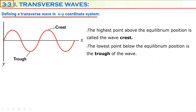According to the waveform, we can define the wave. The equilibrium position is the natural position of the medium with no vibration. When the medium vibrates and produces a disturbance, there are two specific points. The highest point above the equilibrium position is called the crest. The lowest point below the equilibrium position is called the trough.